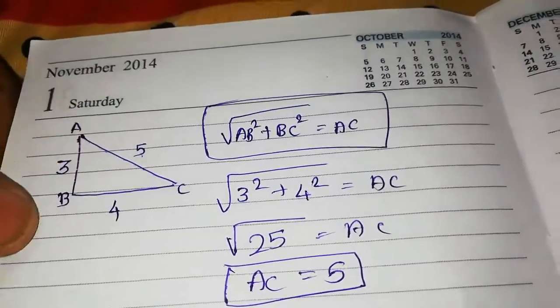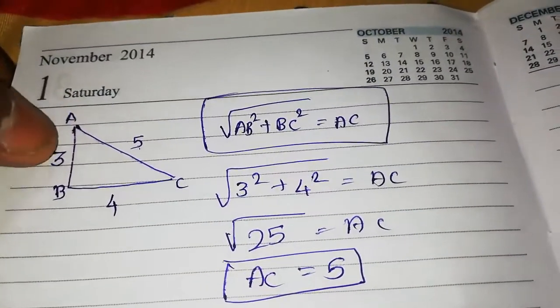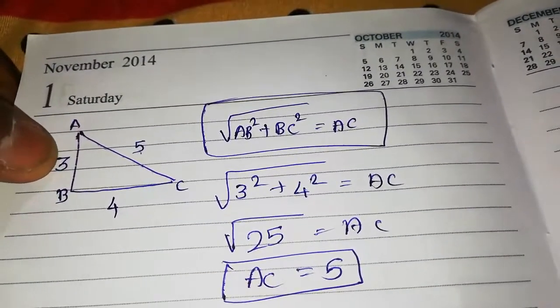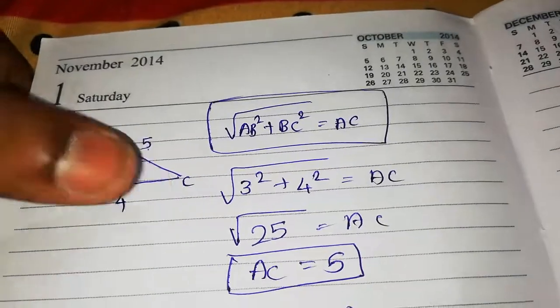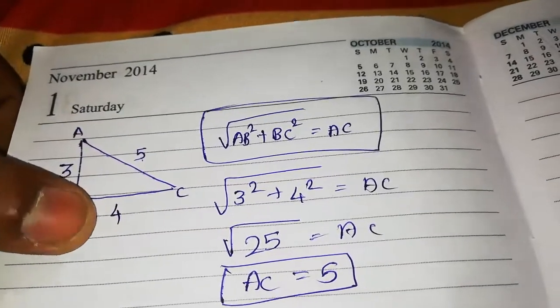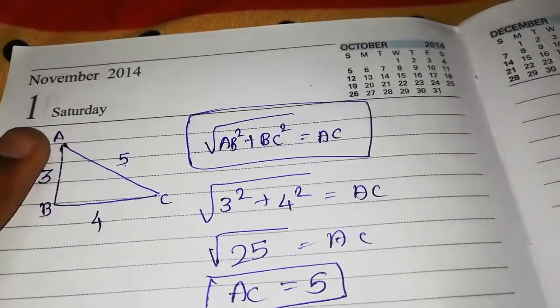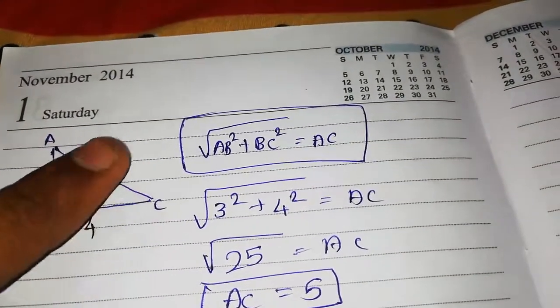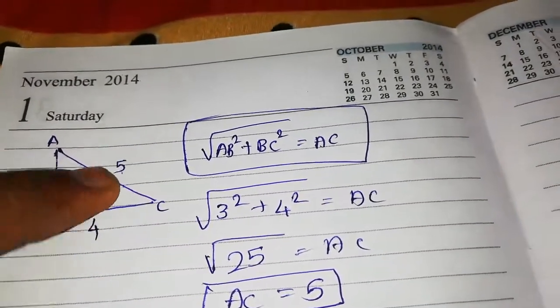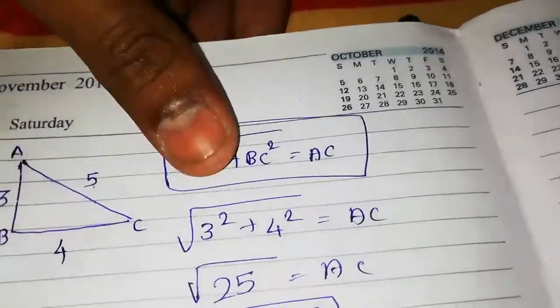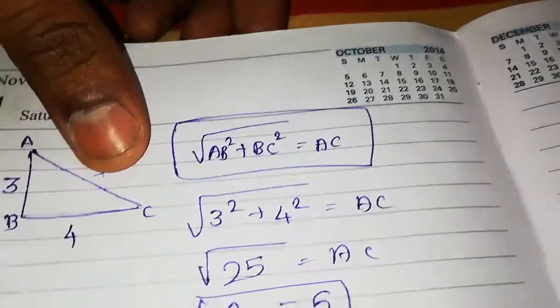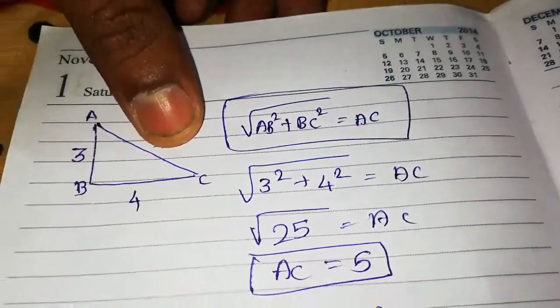A, B, C — side BC is 3 meters, side AB is 4 meters. We are going to find the unknown side AC, which is the question mark. We are going to know it is 5, using the formula.